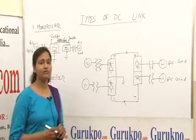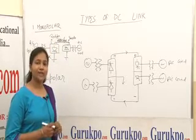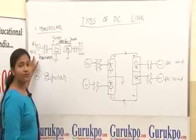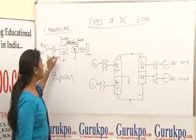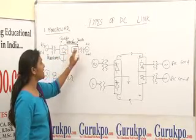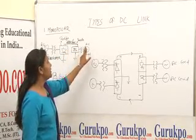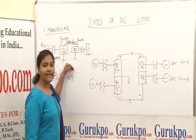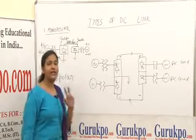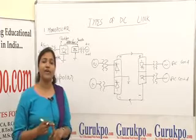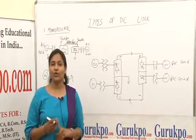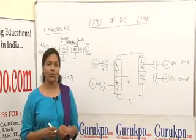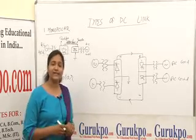First, I will discuss the monopolar type of DC link. In the monopolar type of DC link, we have an AC grid for the AC source, then a transformer, rectifier station, overhead transmission line, inverter station, transformer, and again the load side AC grid. In the monopolar DC link, ground behaves as the return path. It is basically a single conductor type of link system in which only one conductor is used, and the other conductor to complete the circuit is used as the ground. Ground path provides basically low resistance.